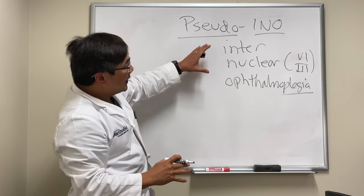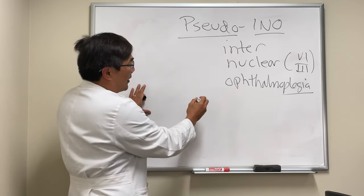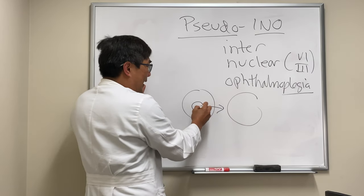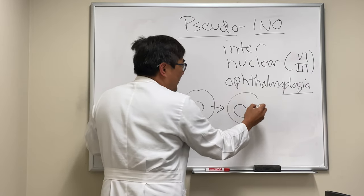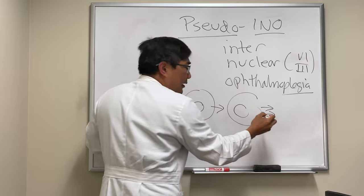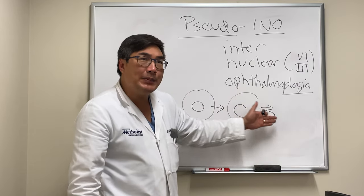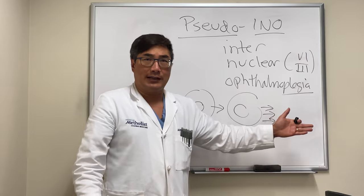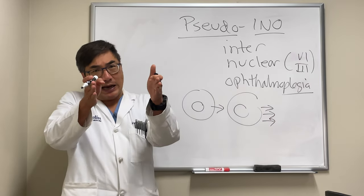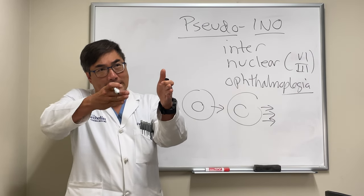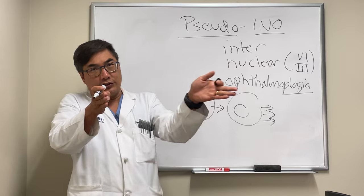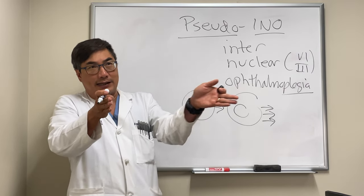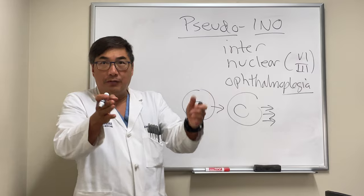A normal internuclear ophthalmoplegia (INO) is an adduction deficit — the eye doesn't adduct — and you get a concomitant dissociated horizontal abducting nystagmus on gaze to the contralateral side. When there's an INO, the eye doesn't adduct, and you get a dissociated — meaning one eye only — horizontal abducting nystagmus in the other eye.